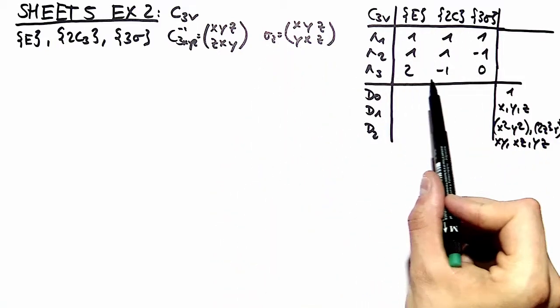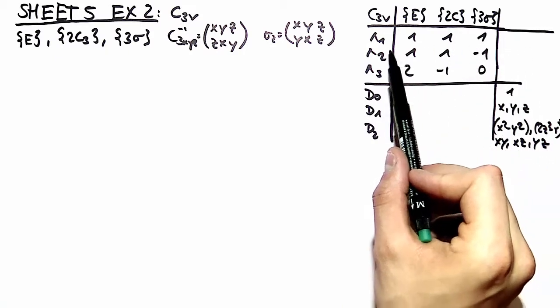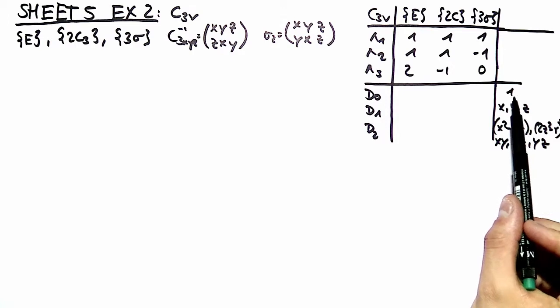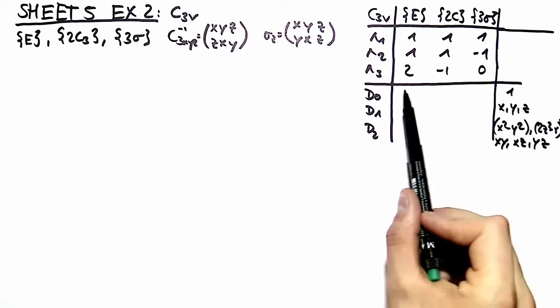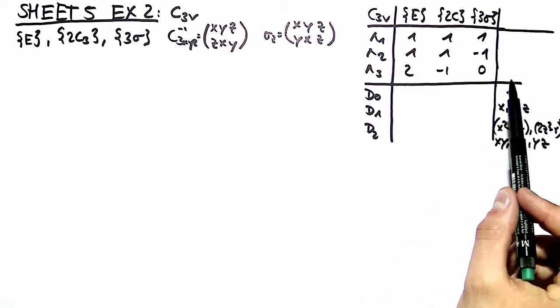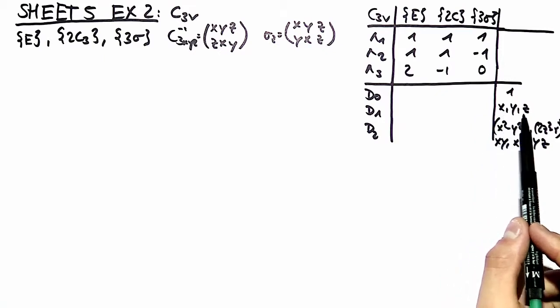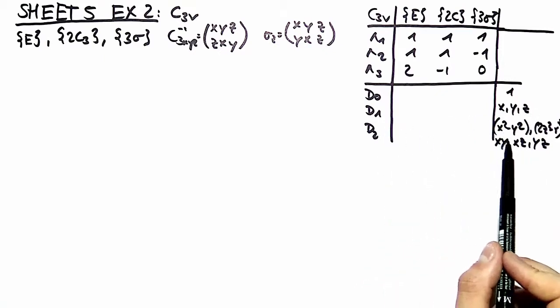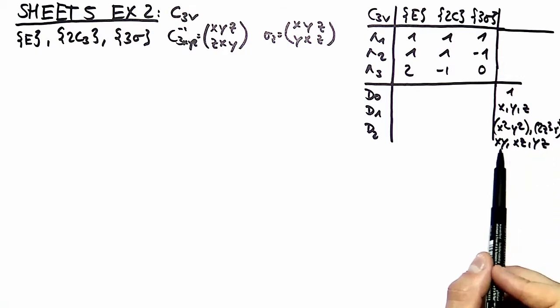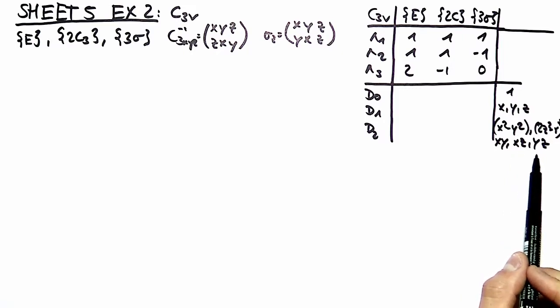Here is the character table for C3v and we already filled that out. In the lecture you already derived the basis functions for your d0, d1 and d2 representation. For d0 you have only the 1. For d1 you have x, y and z. And for d2 you have x squared minus y squared, 2z squared minus r squared, xy, xz and yz.